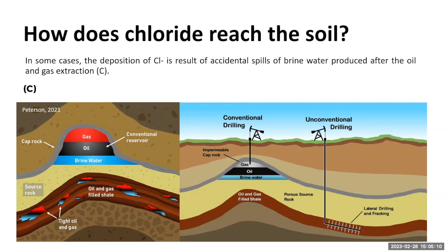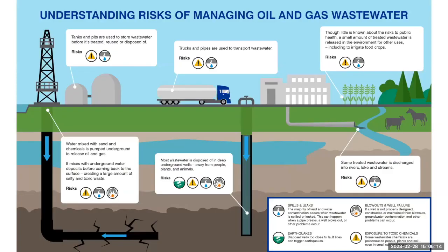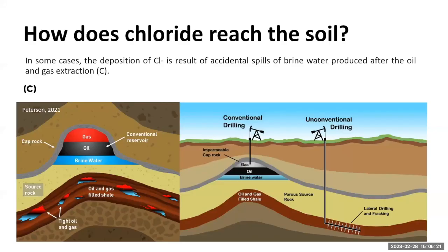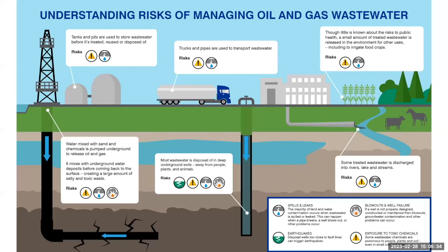And this is not so good. We extract brine water together with the oil and gas during the extraction procedure. If we manage everything correctly, we don't have any problem. But if we have some spill — like accidental spills from a truck, a tank, or pipelines — we will have a serious problem.